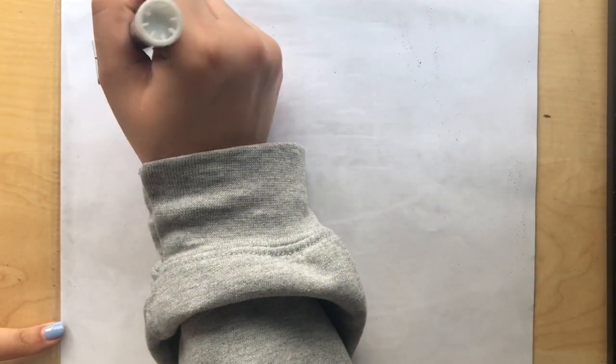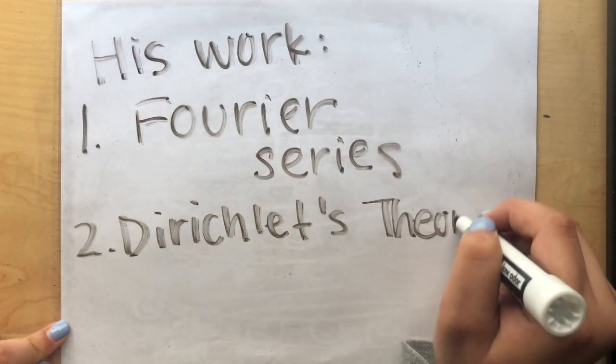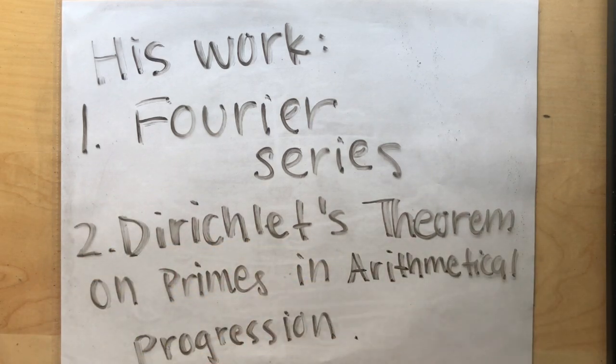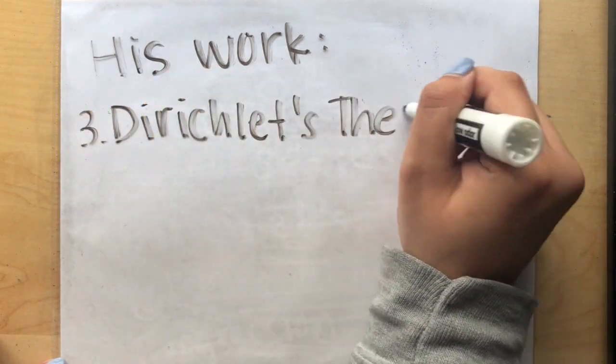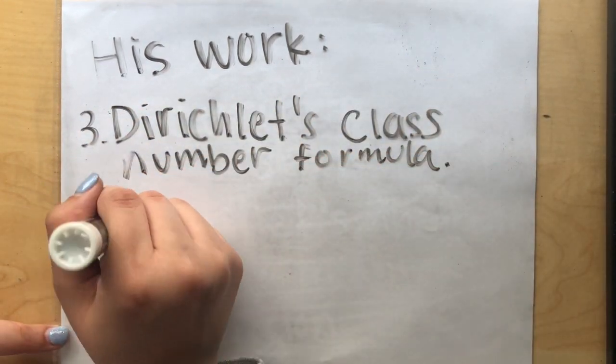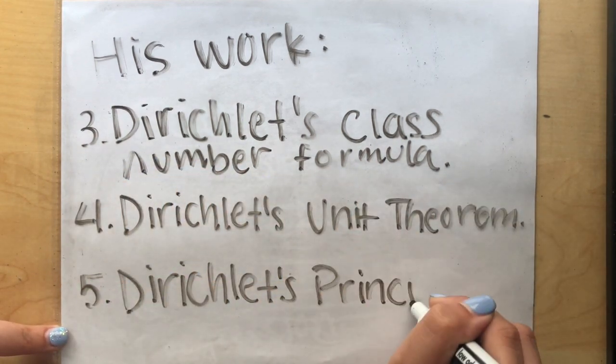Five of his most important works created throughout his life include the Fourier series, Dirichlet's theorem on primes and arithmetical progression, Dirichlet's class number formula, Dirichlet's unit theorem, and finally, Dirichlet's principle.